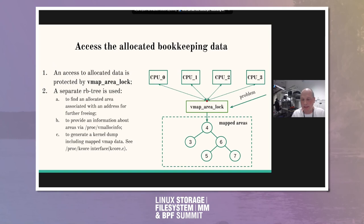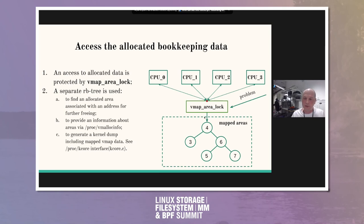Let's talk about accessing the allocated bookkeeping data. On the right side you see the mapped areas data structure — it consists of a linked list and an RB-tree. In the middle we have the vmap_area lock, and at the top you see users — CPUs invoking our APIs like vmap, vmalloc, alloc_vmap_area, and so on. This is a bottleneck for bookkeeping data because each CPU has to wait on each other to accomplish any request. This is problem number one.